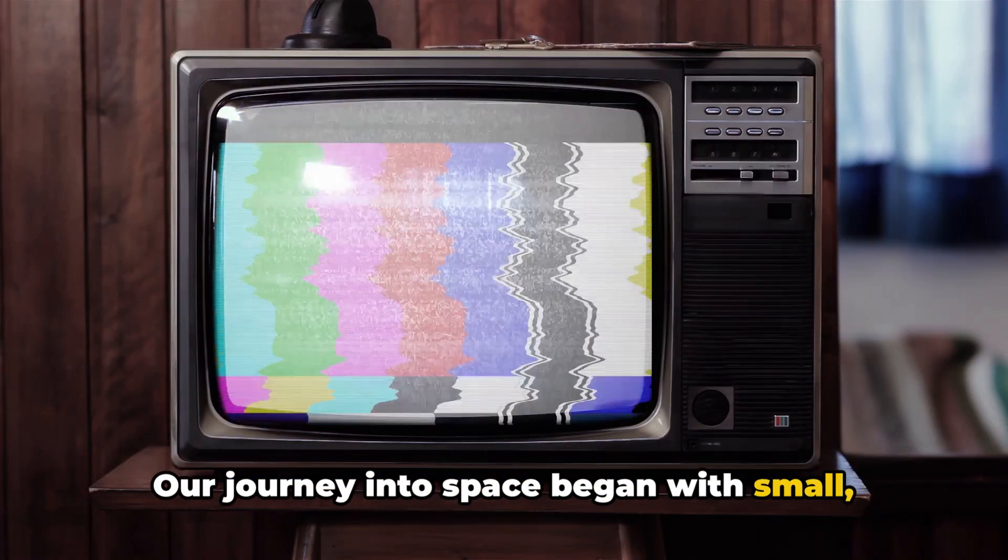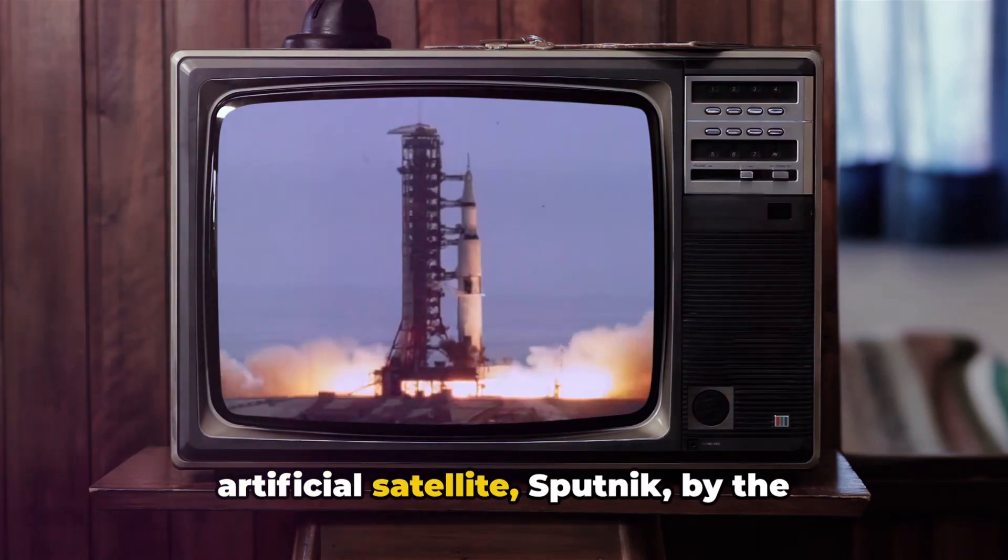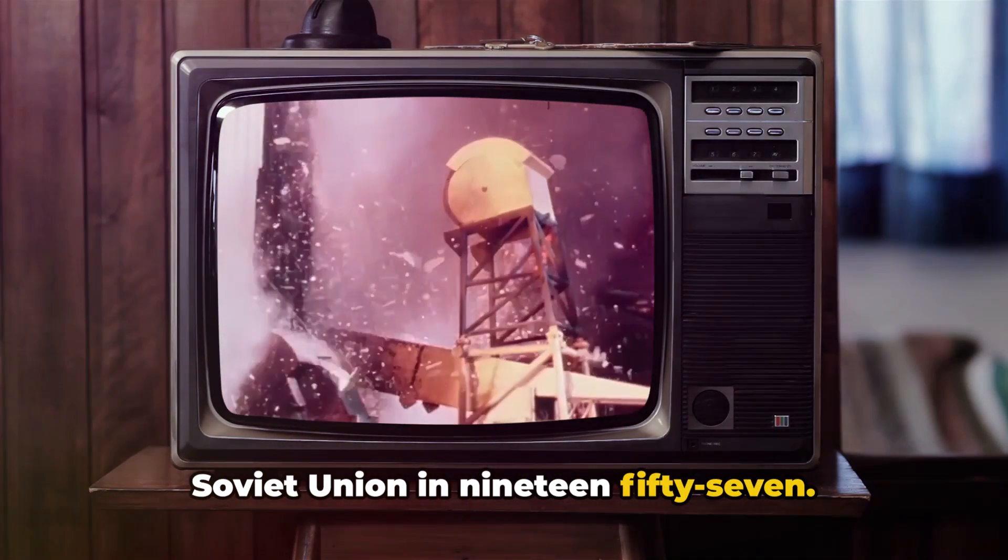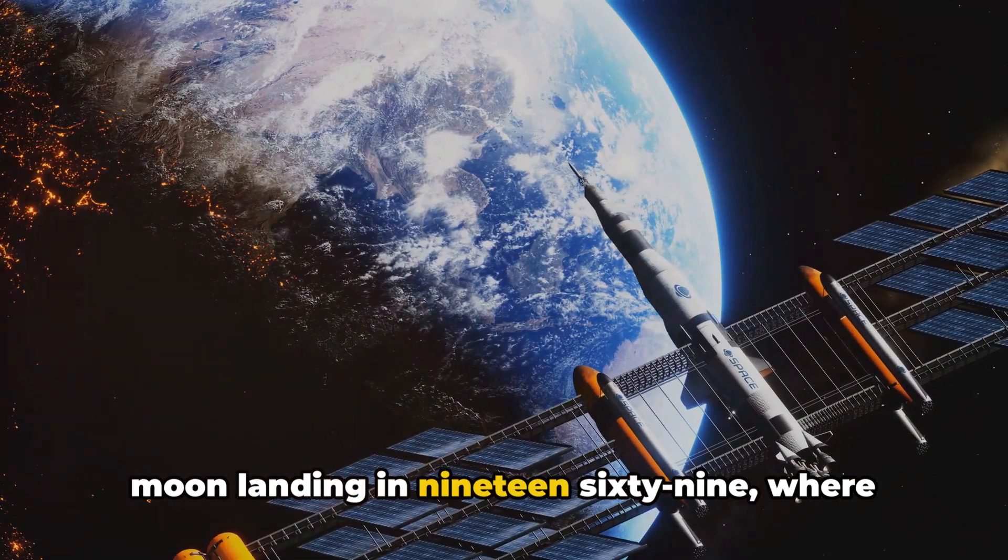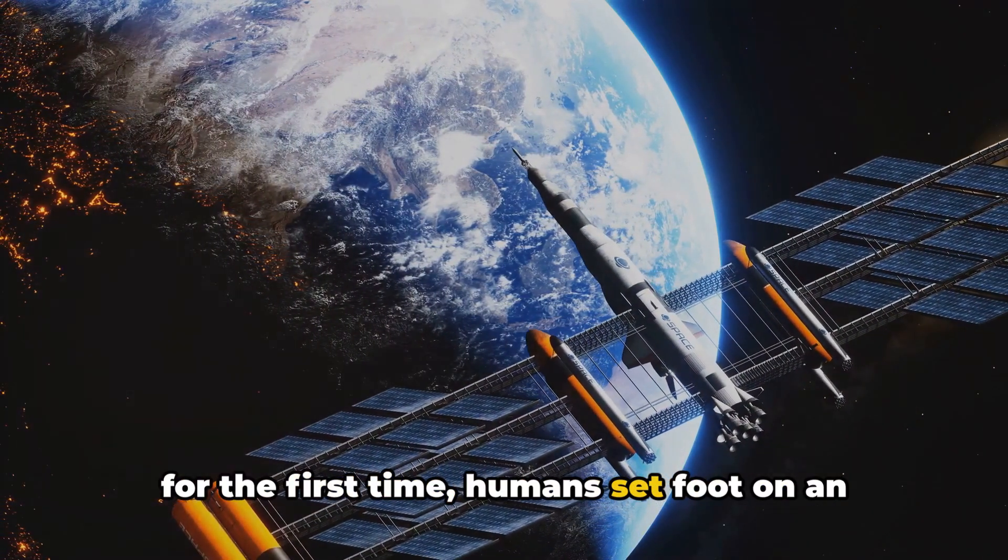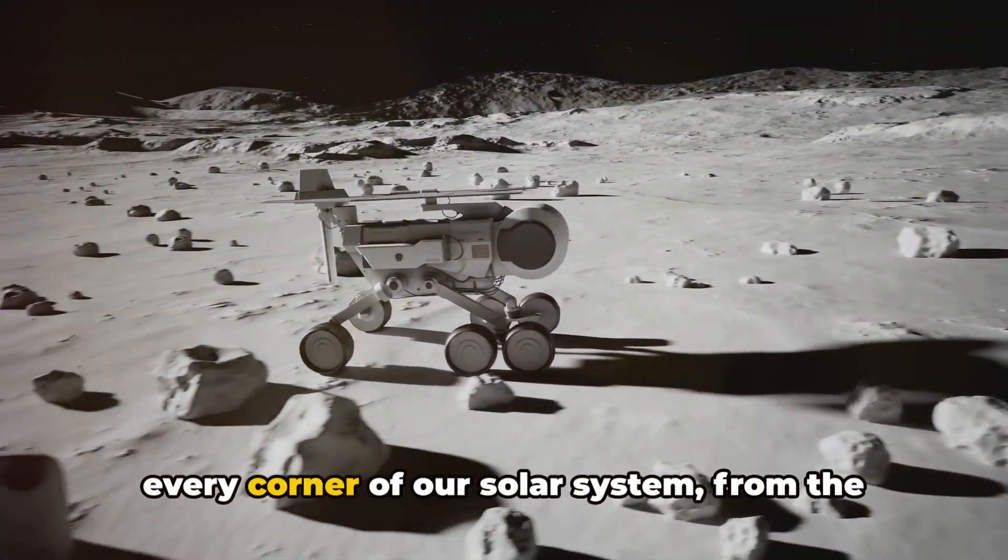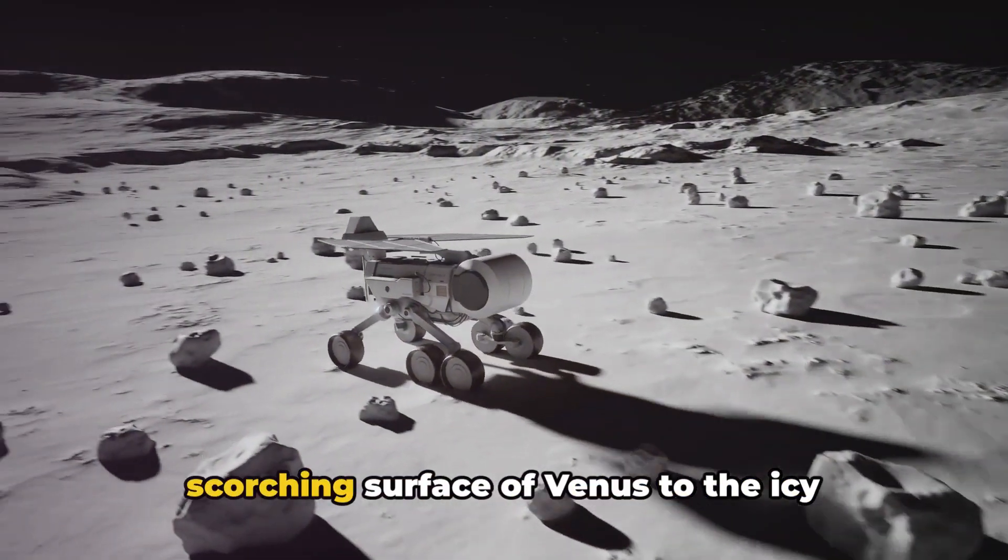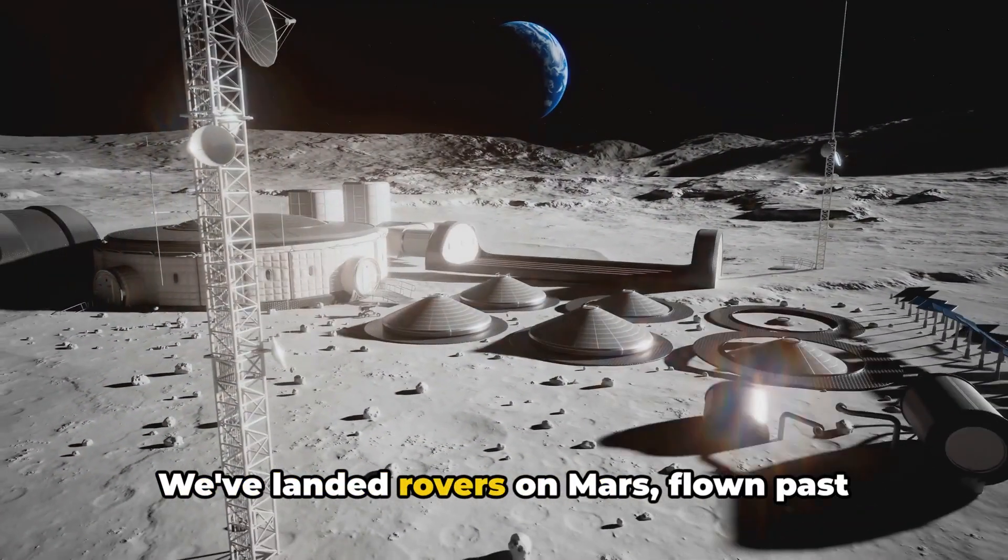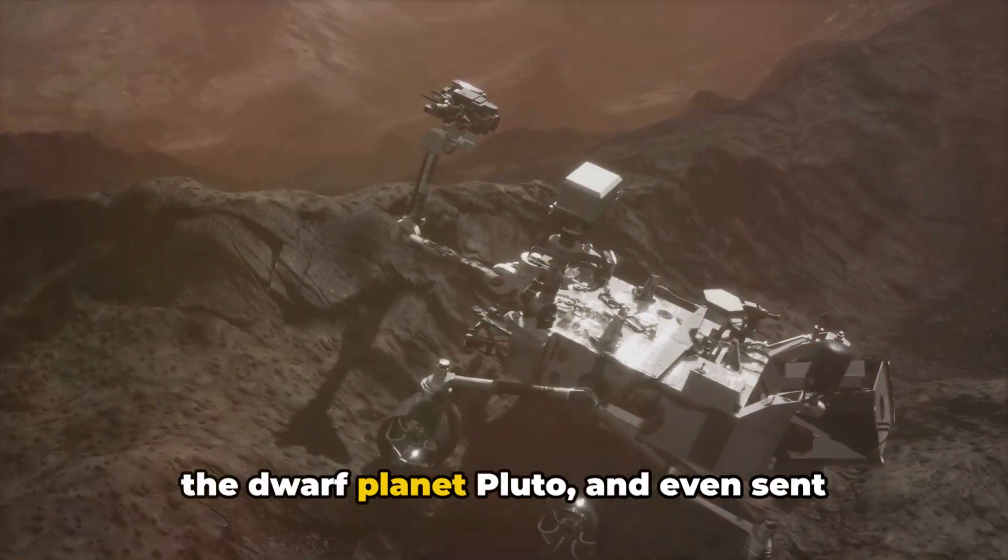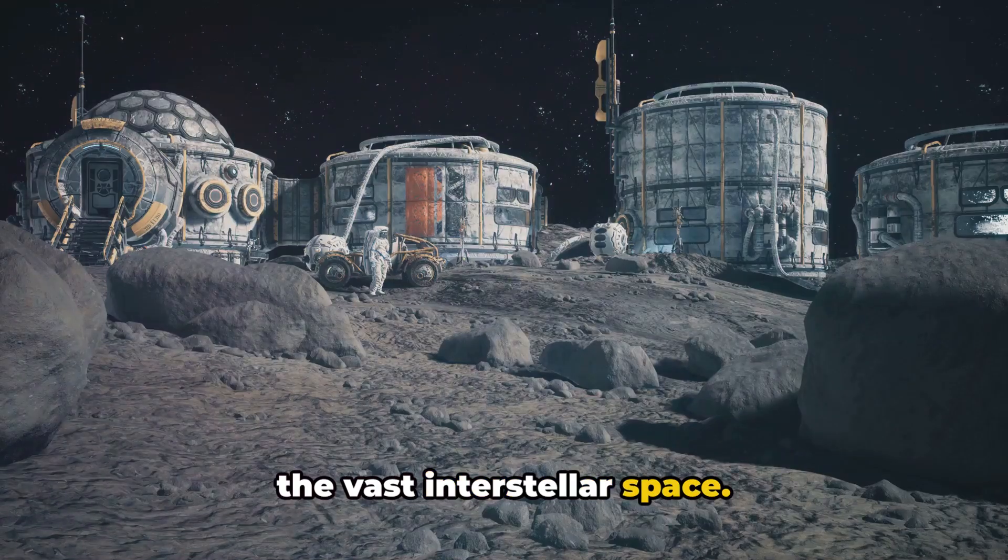Our journey into space began with small, tentative steps. It started with the launch of the first artificial satellite, Sputnik, by the Soviet Union in 1957. This was followed by the historic Apollo moon landing in 1969, where for the first time humans set foot on an extraterrestrial body. Since then, we've sent spacecraft to every corner of our solar system, from the scorching surface of Venus to the icy moons of Jupiter and Saturn. We've landed rovers on Mars, flown past the dwarf planet Pluto, and even sent spacecraft out of the solar system into the vast interstellar space.